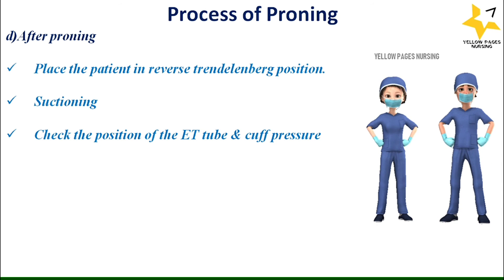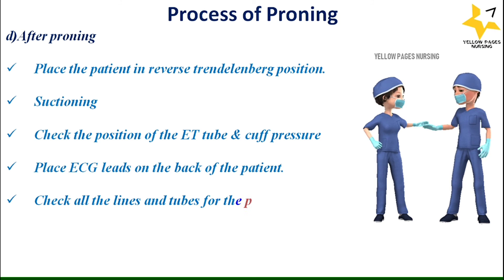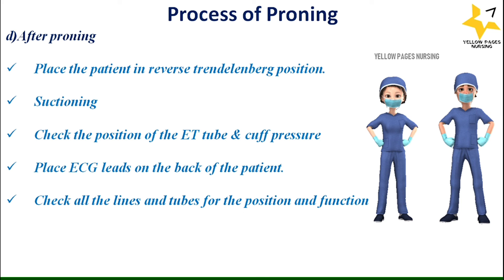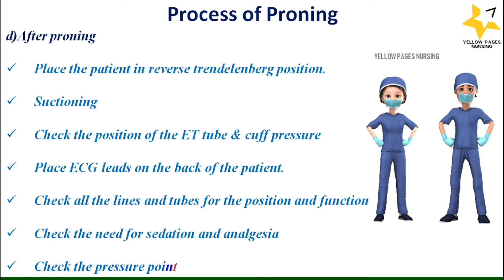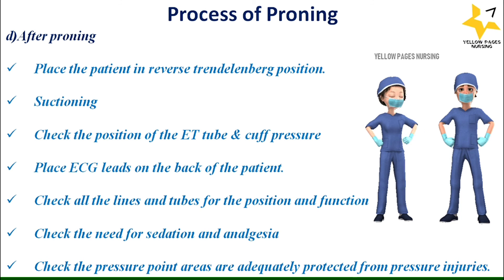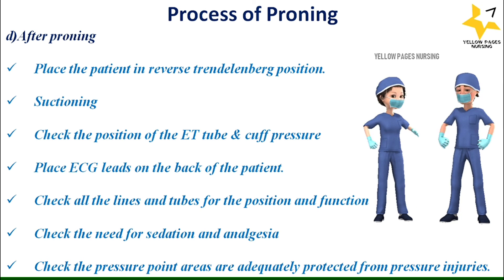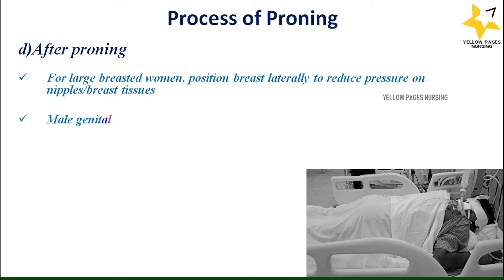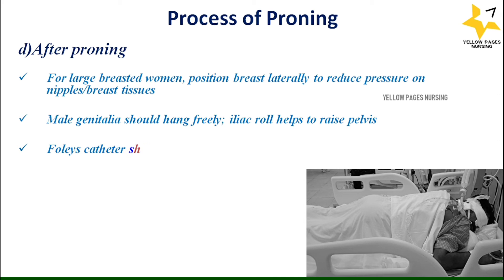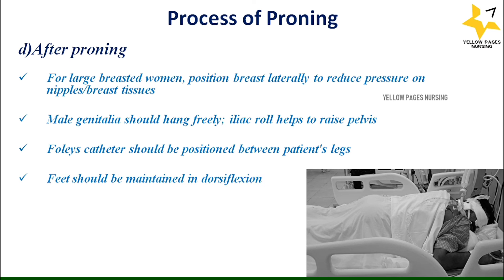Place the patient in reverse Trendelenburg position. Perform endotracheal suctioning and check the position of the ET tube and cuff pressure. Place ECG leads on the back of the patient. Check all lines and tubes for position and function. Check the need for sedation and analgesics. Ensure pressure point areas are adequately protected from pressure injuries. For large-breasted women, position breasts laterally to reduce pressure on nipples and breast tissue.